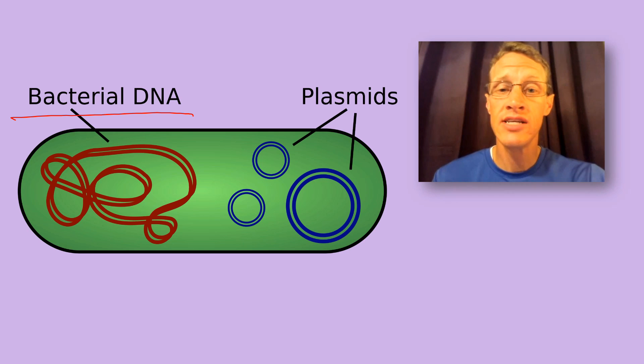For example, various genes on plasmids are responsible for antibiotic resistance, the widely known phenomenon where bacteria are able to resist the very drugs that we use to try and stop them from reproducing.